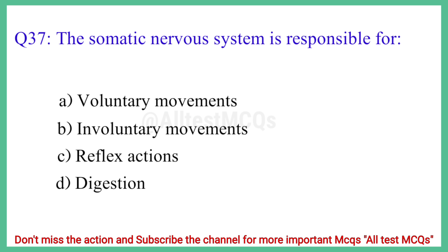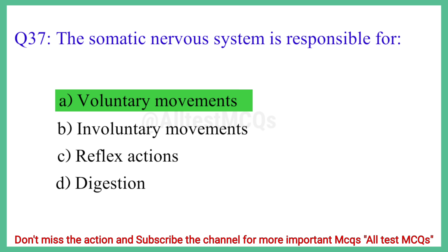Question No. 37: The somatic nervous system is responsible for? The correct answer is option A: Voluntary movements.